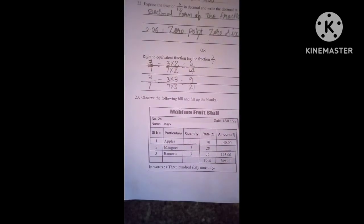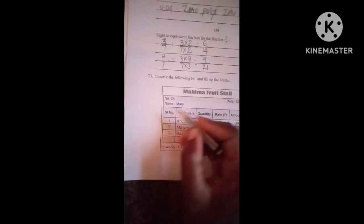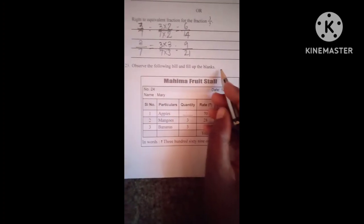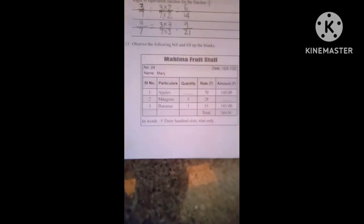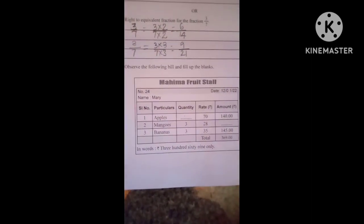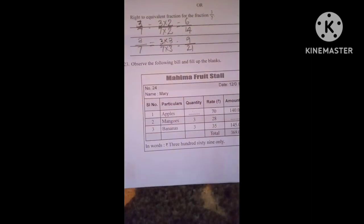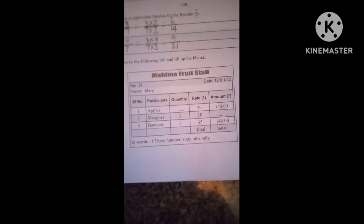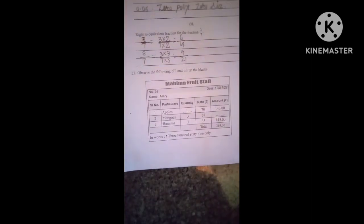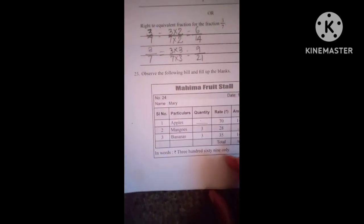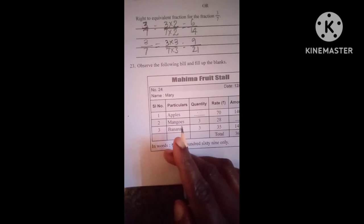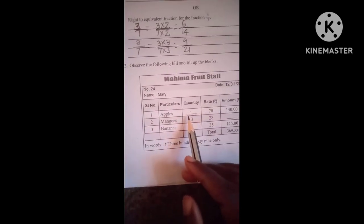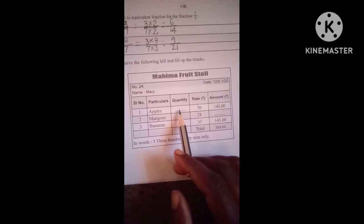Next question, observe the following bill and fill up the blanks. Here they give a bill. You want to observe this and write the correct answer. See, observe this bill and write the correct answer. Serial number they have given, here they missed quantity.